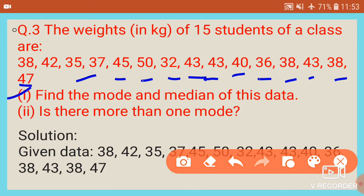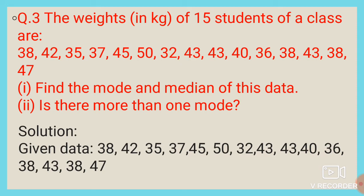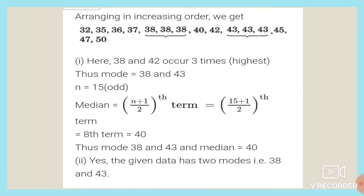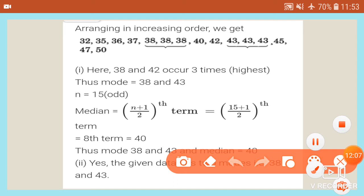We need to find the mode and median. Arranging in ascending order: 32, 35, 36, 37, 38, 38, 38, 40, 42, 43, 43, 43, 45, 47, 50. We notice that 38 appears 3 times and 43 also appears 3 times.